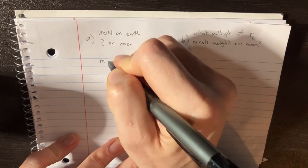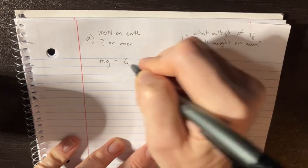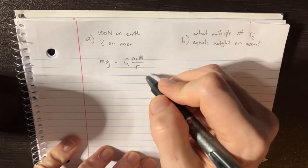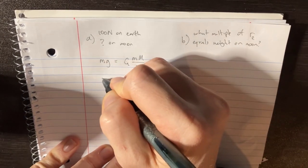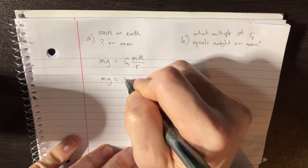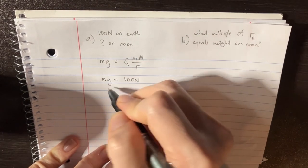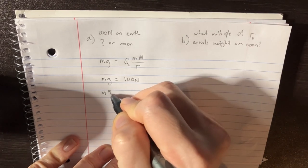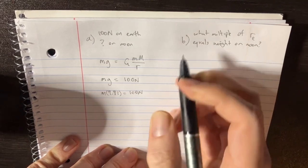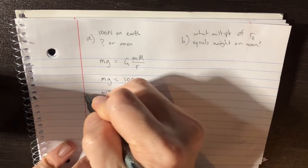We just have to realize that mg is equal to GMm over r squared, and we already know that on planet Earth, mg is also equal to 100 newtons, right? On planet Earth, m times 9.81 is equal to 100 newtons. So this is on Earth,